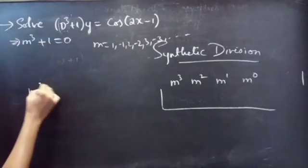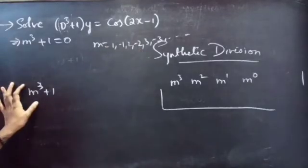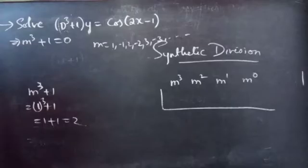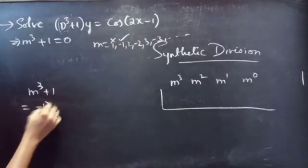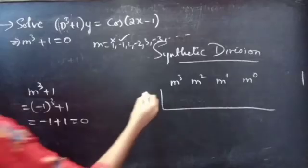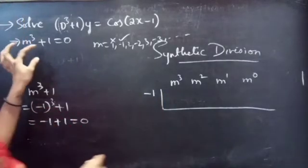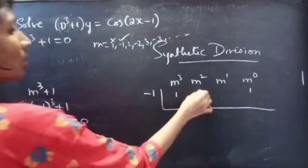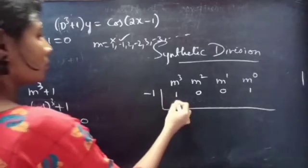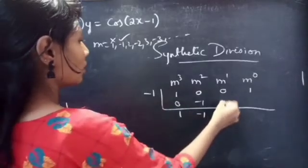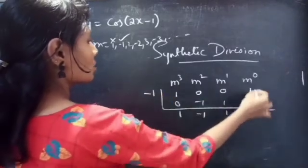Take the polynomial m³ + 1 and see which m satisfies it. Try m = 1: 1³ + 1 = 2, so m = 1 does not satisfy the polynomial. Try m = -1: (-1)³ + 1 = -1 + 1 = 0, so m = -1 satisfies the polynomial. Using synthetic division with coefficients 1, 0, 0, 1: we get 1, -1, 1 as the remaining coefficients, and the remainder is 0.